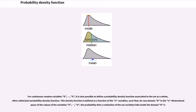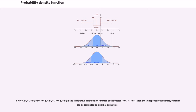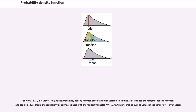For continuous random variables X₁, X₂, …, it is also possible to define a probability density function associated to the set as a whole, often called the joint probability density function. This density function is defined as a function of n variables such that, for any domain D in the n-dimensional space of the values of the variables, the probability that a realization of the set of variables falls inside domain D is the integral of the joint PDF over D. If F is the cumulative distribution function of the vector, then the joint PDF can be computed as a partial derivative. The marginal density function of each variable can be deduced by integrating over all values of the other n−1 variables.